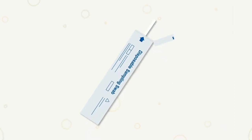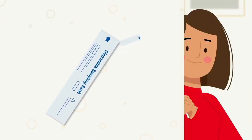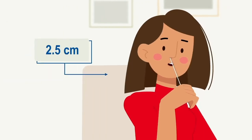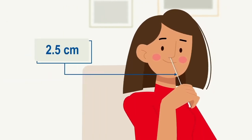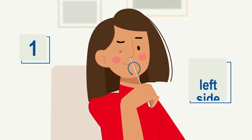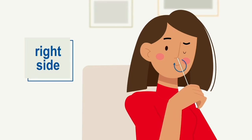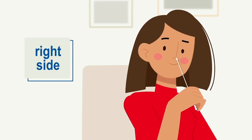Take the swab and be careful not to touch the soft part. Introduce it carefully into one of your nostrils, no less than 2.5 cm from the edge of your nostril. Roll the swab to be sure that mucus and cells are collected. Wait a few seconds and repeat the same process for your other nostril.